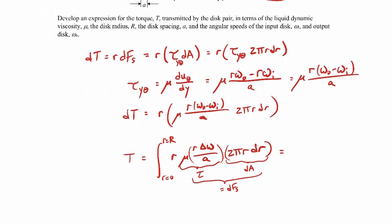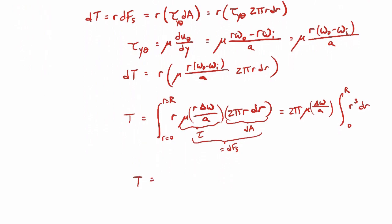We can pull out some constants. We're going to have 2 pi times mu times delta omega all over a, and then what's left in the integral will be r cubed dr. So the torque in the end will be pi over 2 mu delta omega over a times capital R to the fourth. That's the torque that will be transmitted between the two rotating disks.